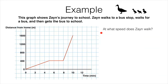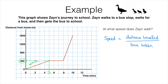The fourth question asks at what speed Zane walks. This section of the graph shows him walking — he walked a distance of 400 meters in five minutes. Using the formula speed equals distance travelled divided by time taken, we get 400 divided by 5, which gives us 80. The units here are meters per minute, since we divided 400 meters by five minutes, giving 80 meters per minute.